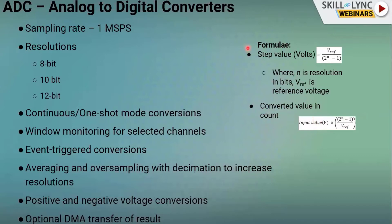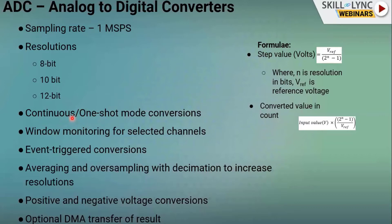ADC conversion can be continuous or one-shot. In one-shot mode, it takes one sample, converts it, and stops automatically. In continuous mode, it continuously converts the input value. If you want to capture samples over a period of time — say 8 milliseconds — you configure the ADC in continuous mode and it keeps converting until you stop it.